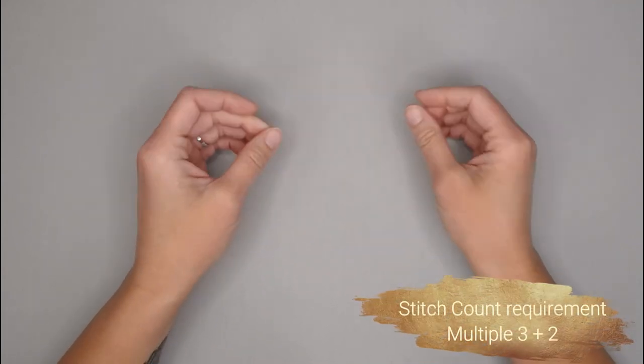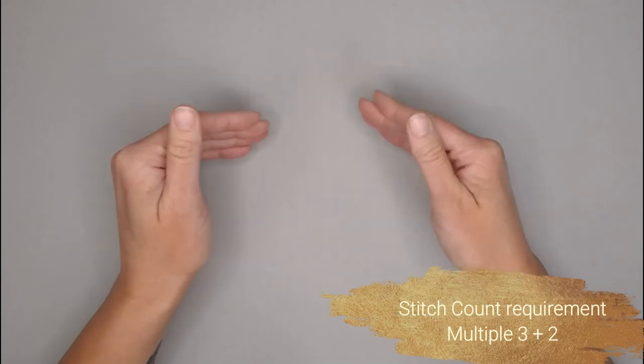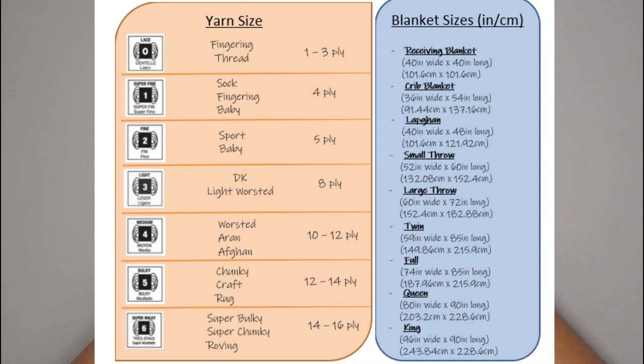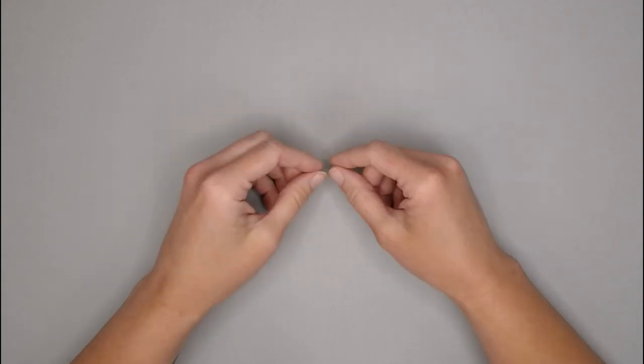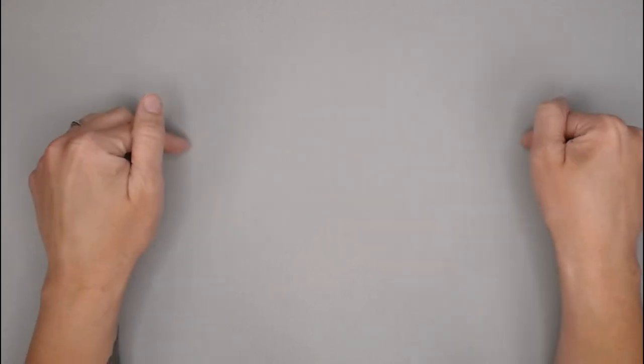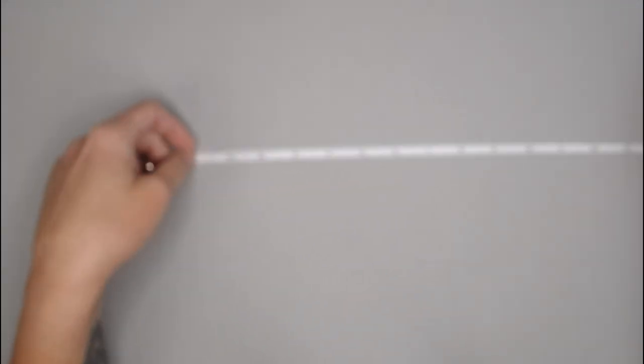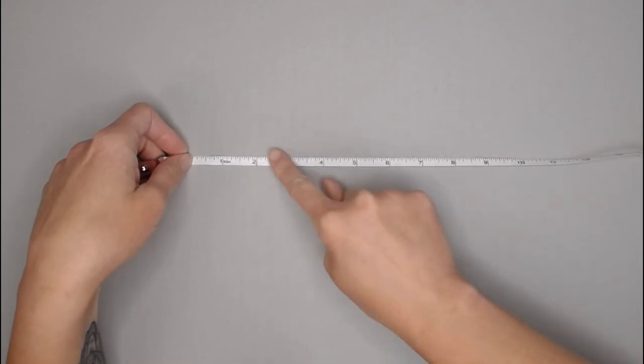There is a stitch count requirement for the waffle crochet stitch. It is in a multiple of three plus two. If you would like to make a blanket utilizing this waffle crochet stitch, I will include a chart that has all of the blankets and their dimensions to meet that blanket size requirement. What you will do is you will chain your foundation row chain in a multiple of three plus two, then grab your tape measure and measure it to make sure it has met blanket dimensions width wise.